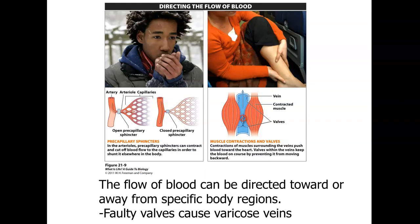Blood flow can be directed toward or away from specific regions using pre-capillary sphincters — circular smooth muscles controlled by the nervous system, not under voluntary control. When contracted, they keep blood from flowing into capillaries; when open, they allow free blood flow. Muscle contractions also work on the valves of veins: contracting forces blood upward, opening the top valve while closing the bottom to prevent backflow.